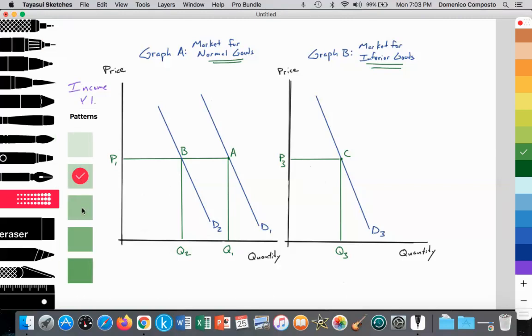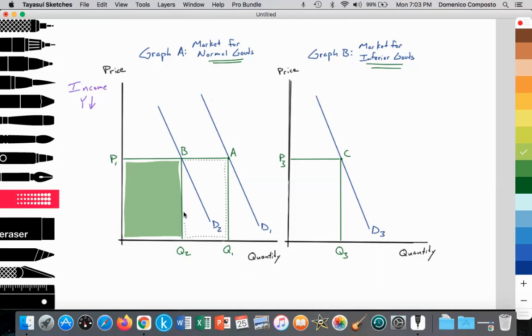So illustrating that again, we're going to highlight these rectangular boxes since total revenue is price times quantity. We're going to go ahead and label this. Here is A and B.